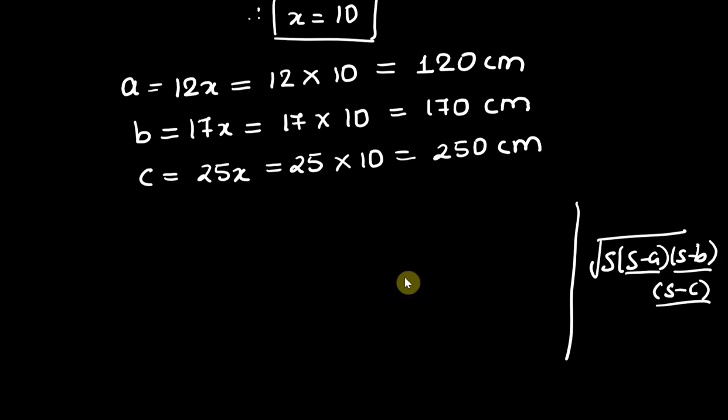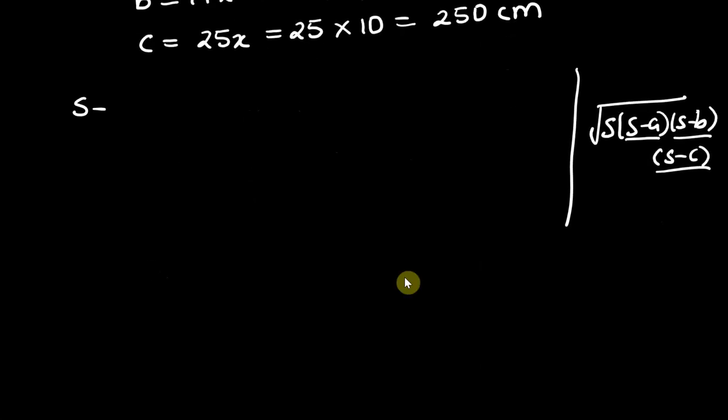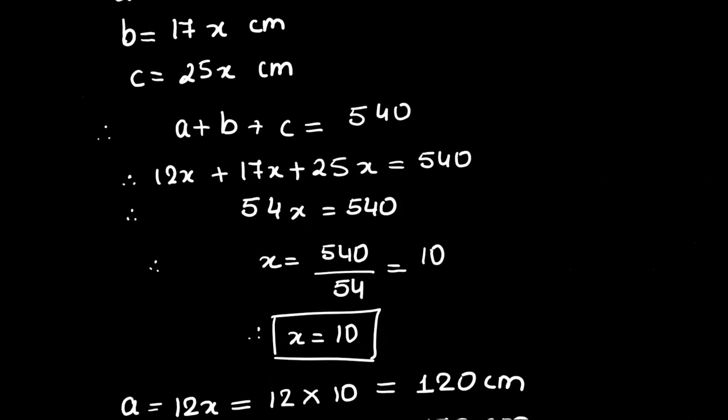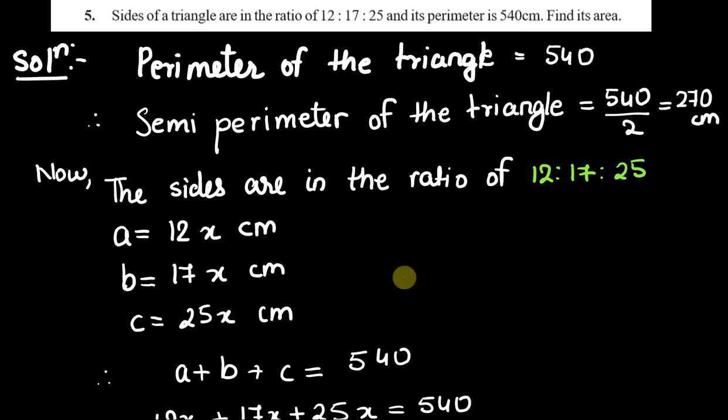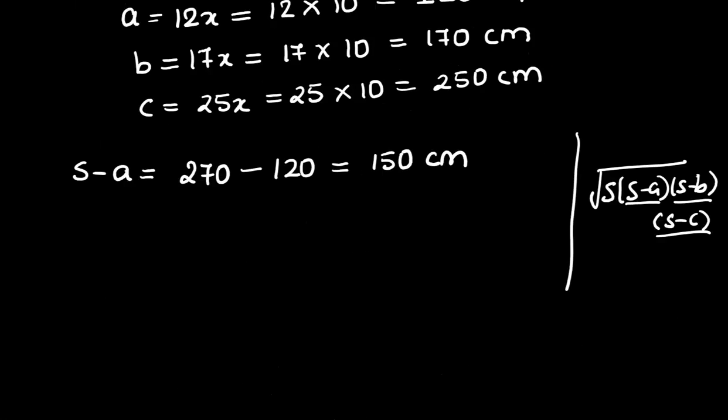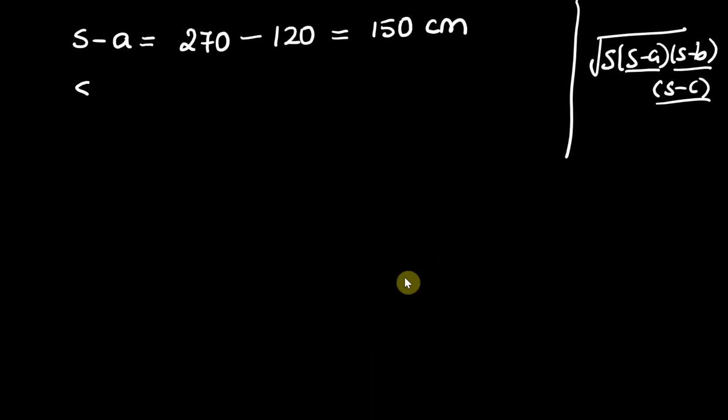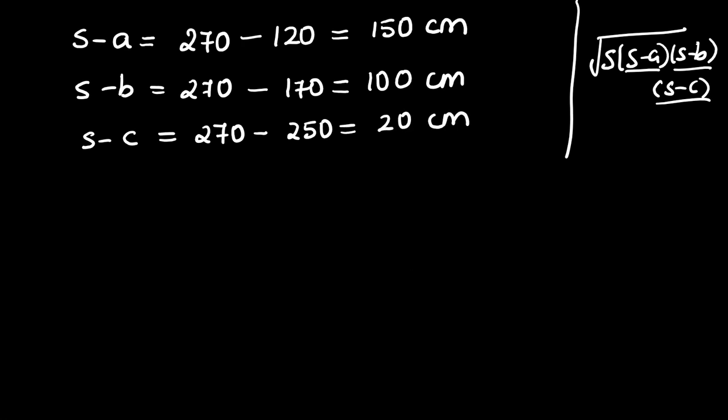Area of triangle is square root of s(s-a)(s-b)(s-c). So I'm going to write this separately so that it will look neat. s minus a is what? s is 270 and a is 120, so it will come out as 150 centimeter. s minus b is 270 minus 170, that is 100 centimeter, and s minus c is 270 minus 250, 20 centimeter.